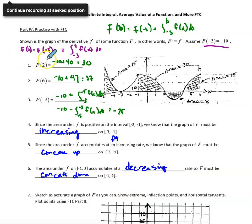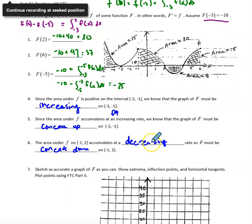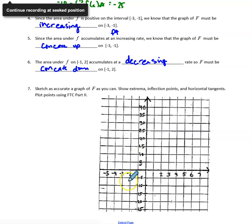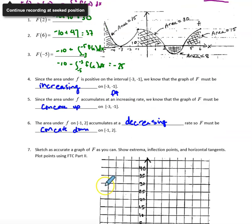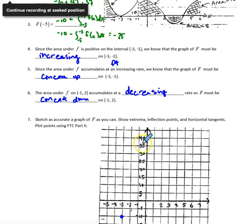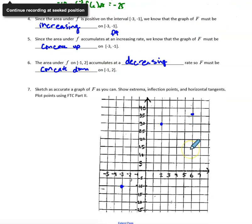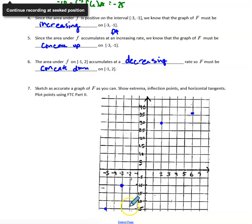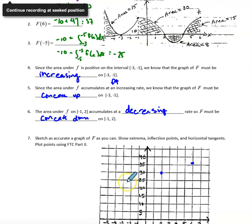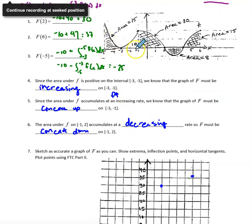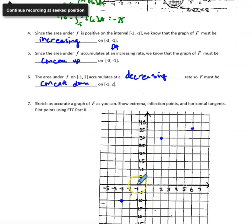Let's start by plugging in the values we know are on the antiderivative. We know big F of negative 3 is negative 10 — that's given. We found big F of 2 is 30, so we plot that point. Big F of 6 is 37, so we plot that point. Big F of negative 5 is negative 25. We can also find big F of negative 1: starting at negative 10 and accumulating 10, big F of negative 1 is 0, so we know the x-intercept of our function.